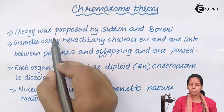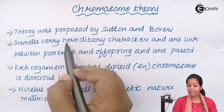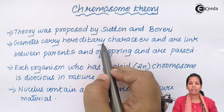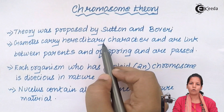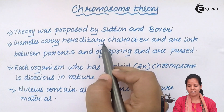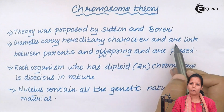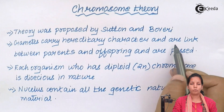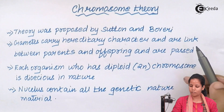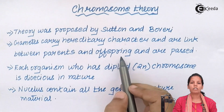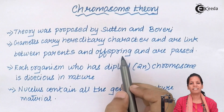Once they proposed this theory, it states that gametes carry hereditary characteristics. Hereditary means something that is passed from your father to you and will be passed from you to your children — passed on from generation to generation, and is a link between the parents. For example, some characteristics you get from your father whereas some you get from your mother, so it's a combination of two. Offspring usually pass these characteristics to further generations.